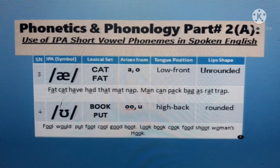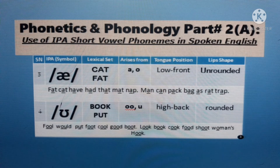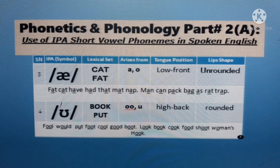Short vowel sound number three: /æ/ — tongue position is low front; lip shape is unrounded. Examples: nap, mat, that, had, have, cat, pat, rat, bag, pack.